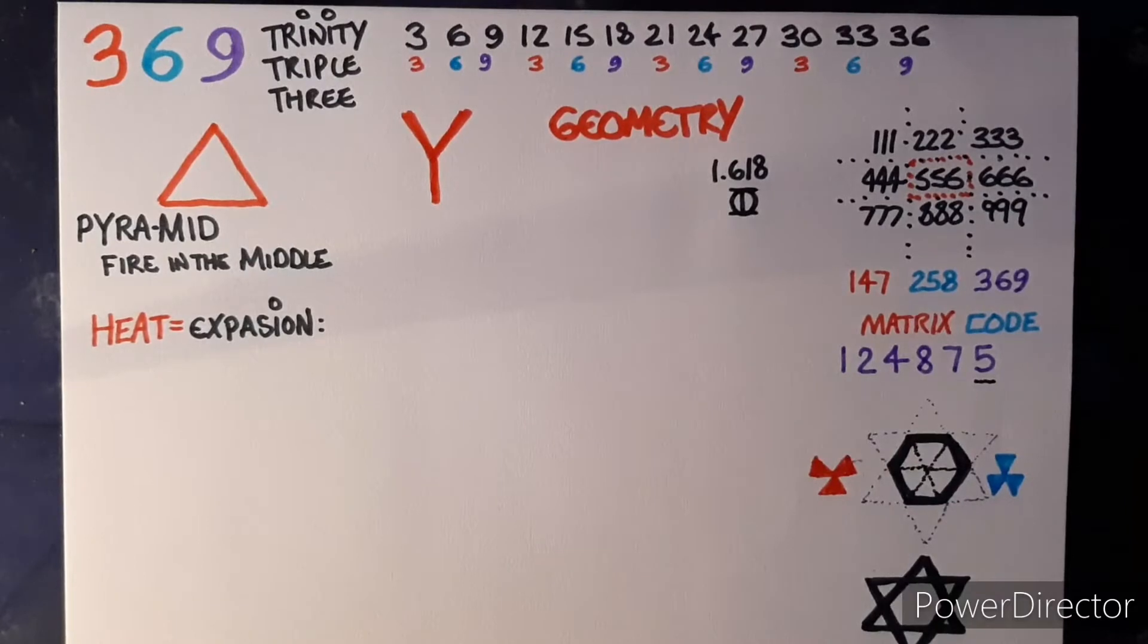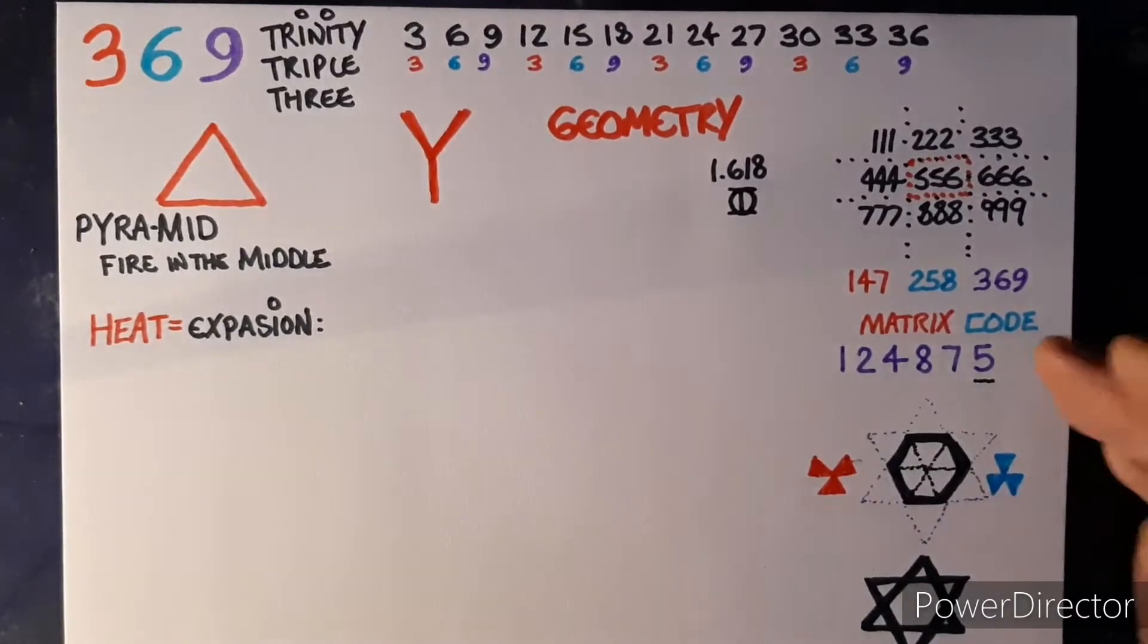That will govern how the three and six work with each other. They'll alternate a current, so the three six and nine are going to alternate the current into a one two four eight seven five. For me, that's the matrix code.